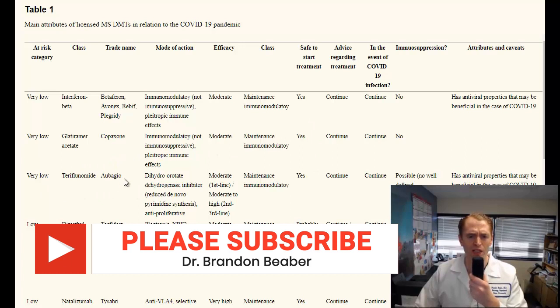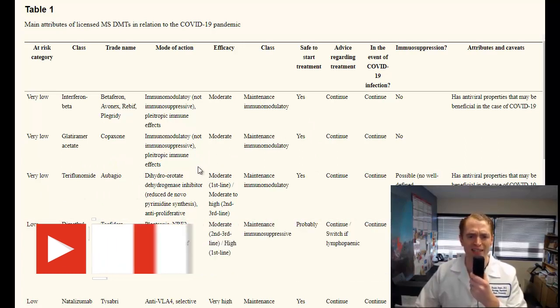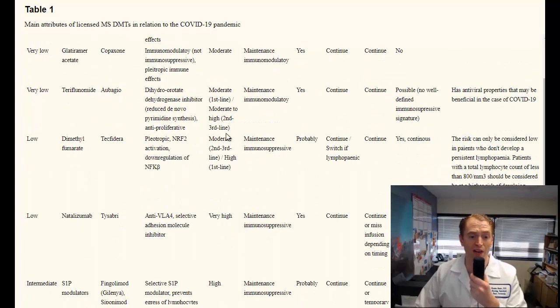Now, teriflunomide or Aubagio is a little bit interesting. It works on pyrimidine or DNA synthesis, and it basically inhibits certain rapidly dividing cells, as in certain immune cells. Despite that mechanism of action, studies show that it's not really a strong immunosuppressive. There aren't really a lot of infections associated with it. They also mentioned that it does have some antiviral properties. Me personally, I would think it's likely a little bit higher risk than glatiramer acetate and interferon beta. They put it in the same category, very low, but there's no specific reason to stop it, according to these authors.